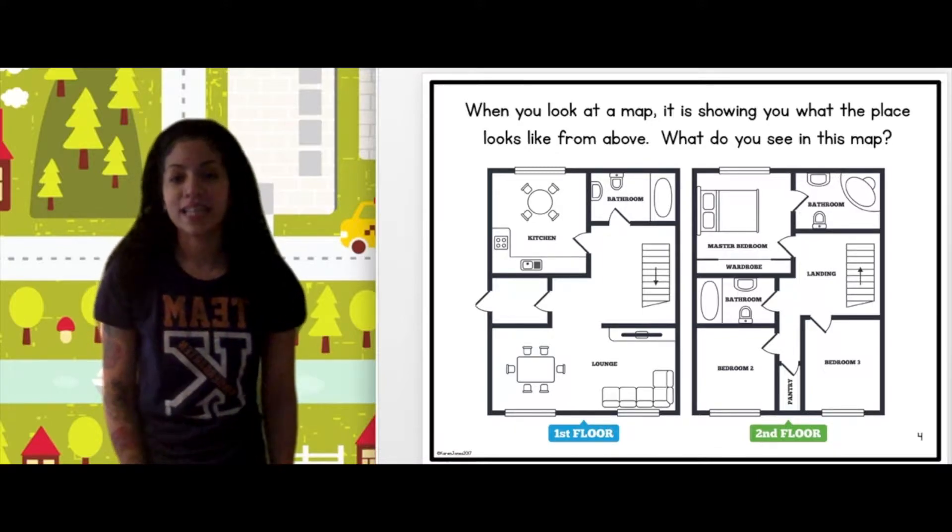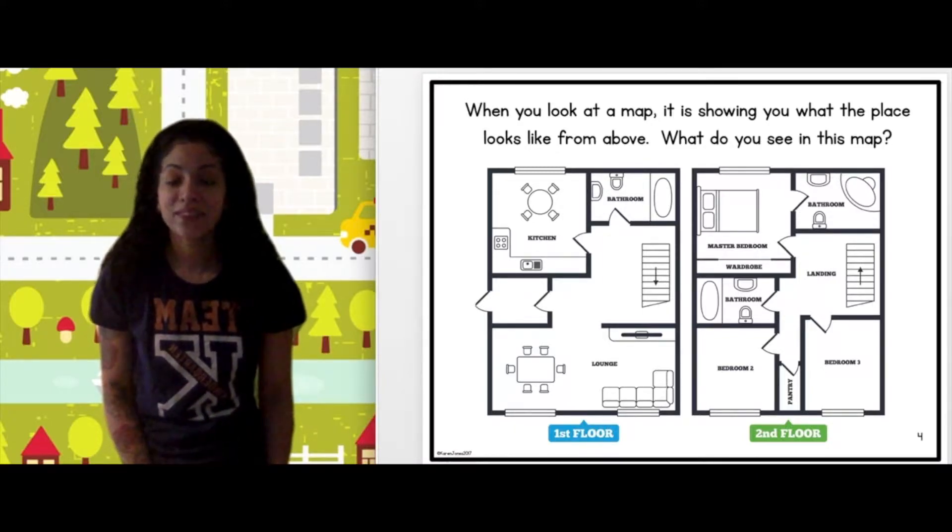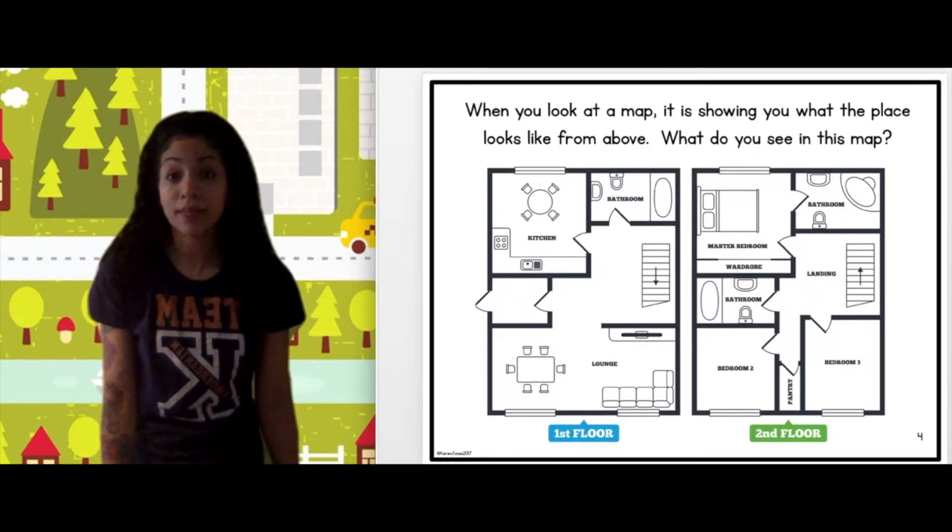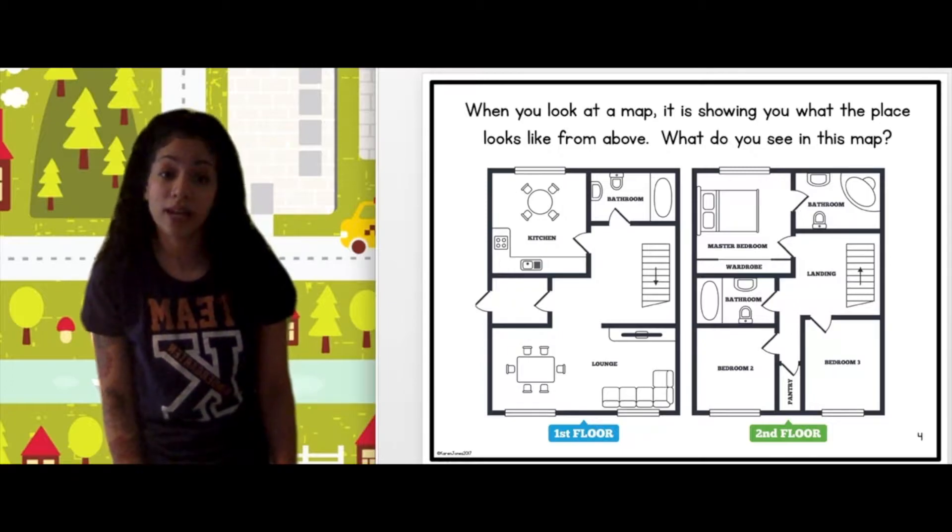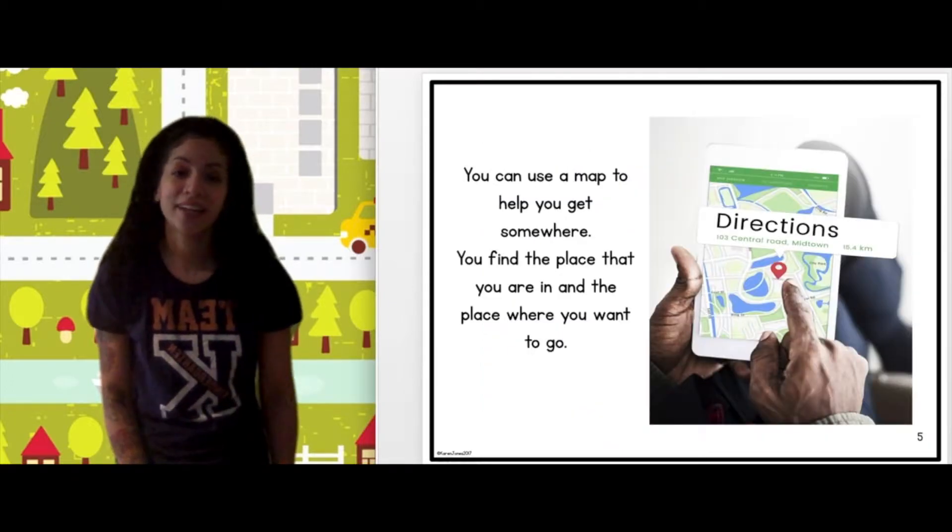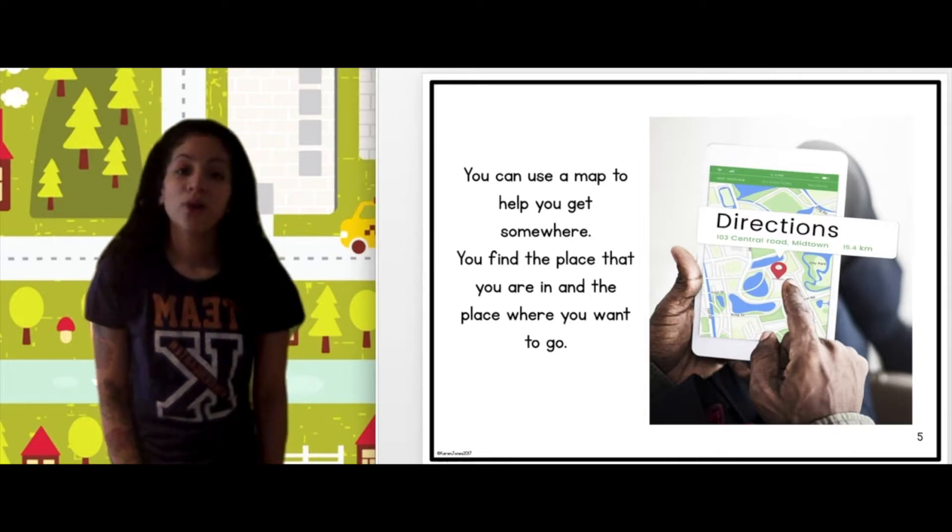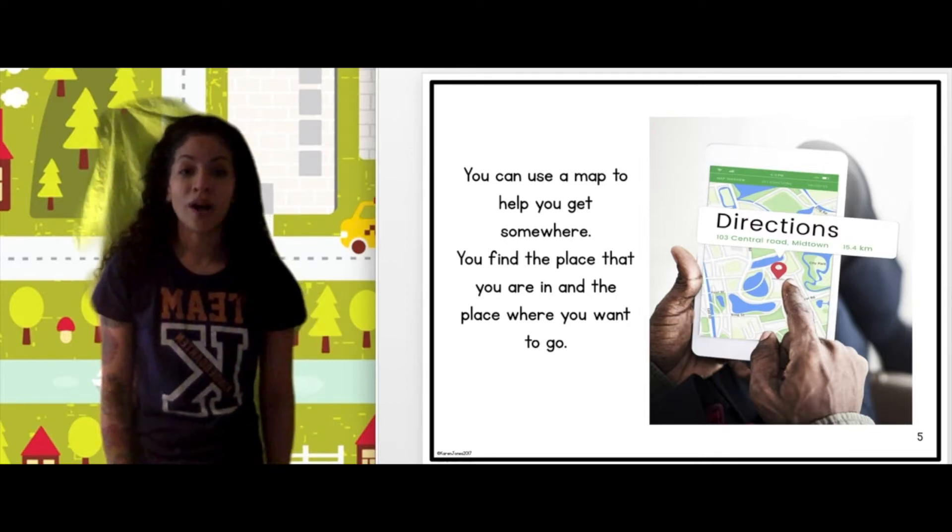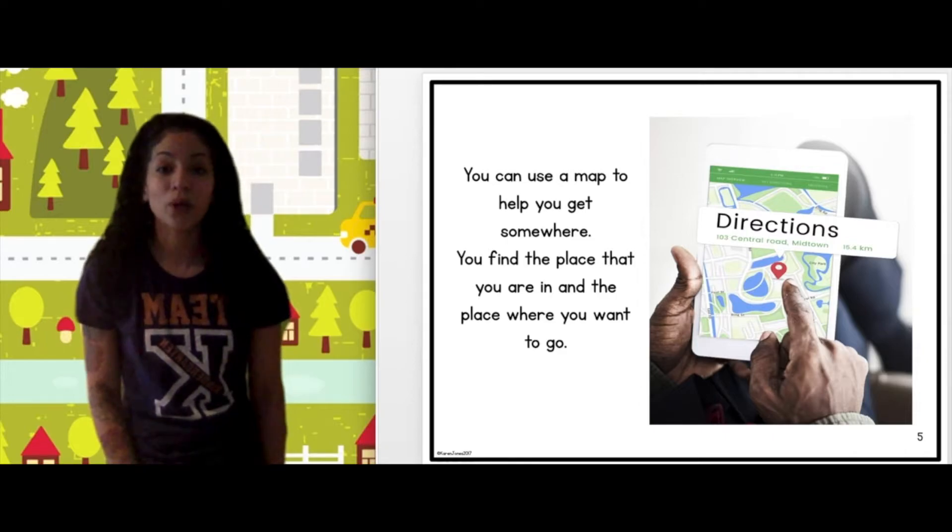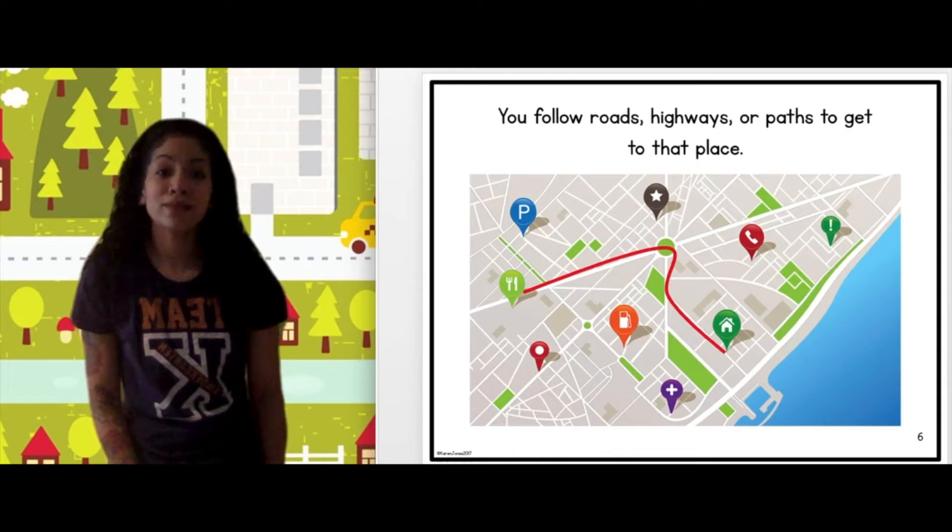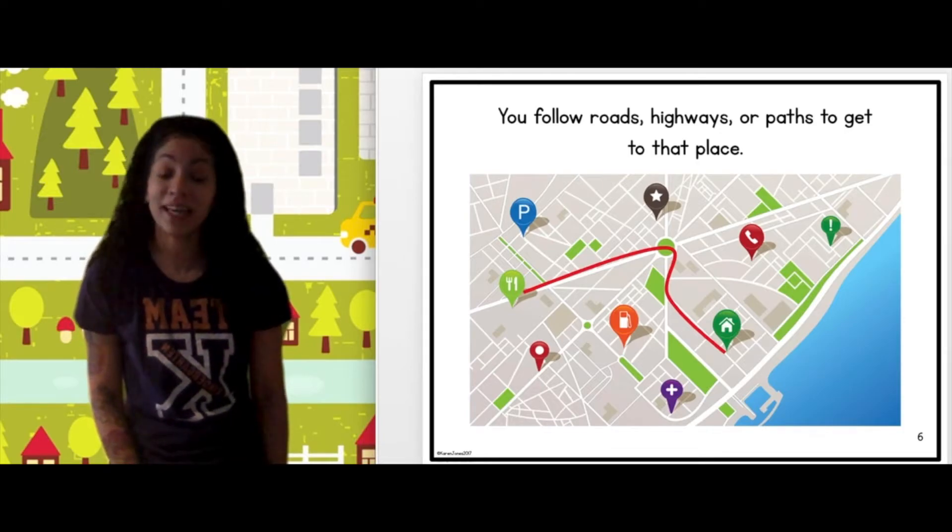What do you see in the map? Yeah, you might say it looks like somebody's house, maybe on the top floor and on the bottom floor. You can use a map to help you get somewhere. You find a place that you are in and a place where you want to go. You follow roads, highways, or paths to get to that place.